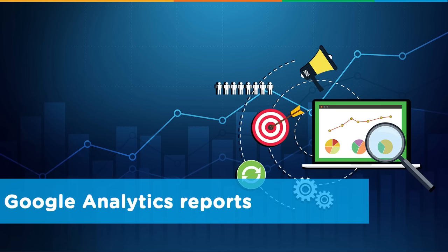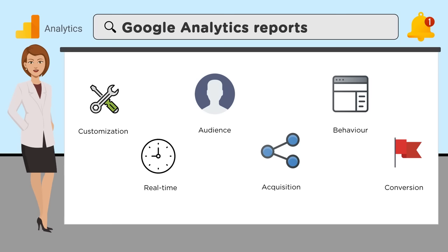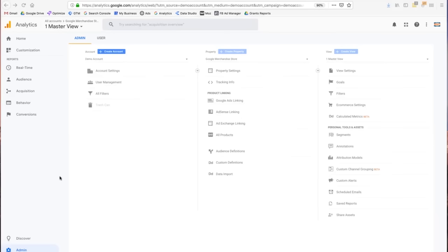Once you've set up your account, you have a number of different reports available to you in Google Analytics: customized reports, real-time, audience, acquisition, behavior, and conversion. These are all the different reporting buckets available to you. Let's start out by looking at real-time.